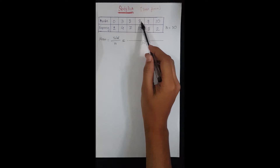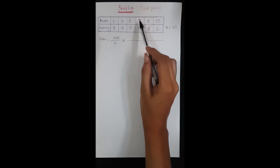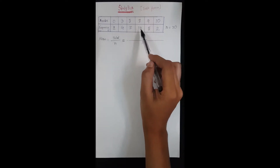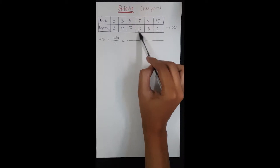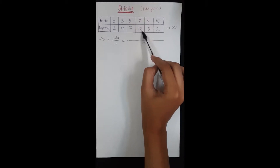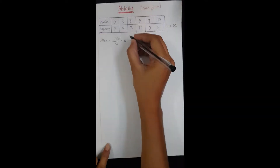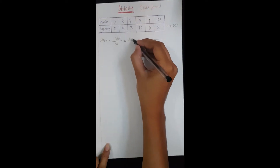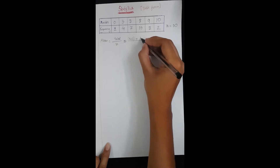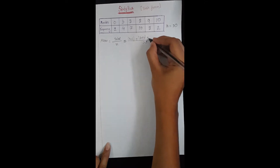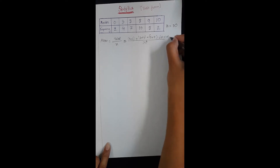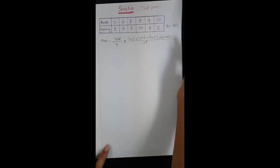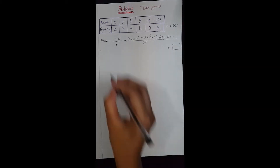For example, 10 students scored eight means each of the 10 students got eight, so the total score of those 10 students is 80. That's why we multiply the numbers. In this way we multiply all the numbers and the final sum divided by N will give the mean.